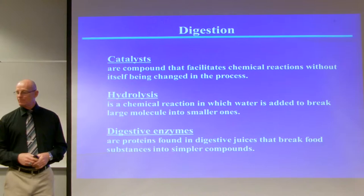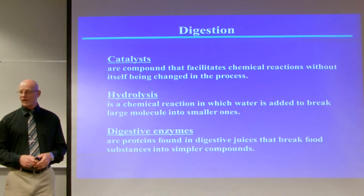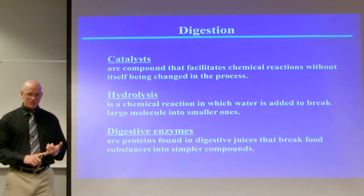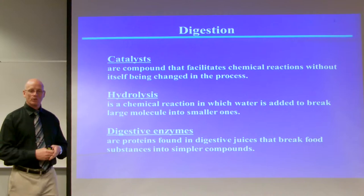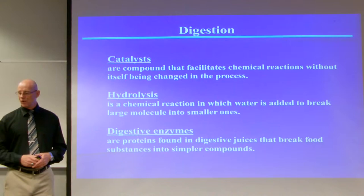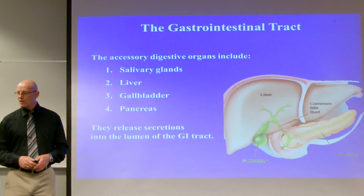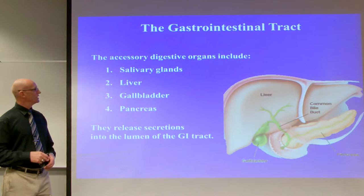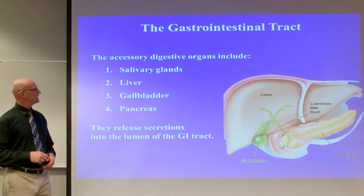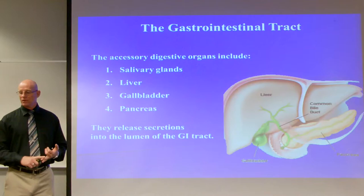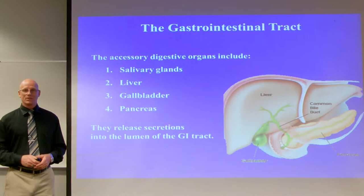There are several ways of breaking substances down during digestion. Catalysts are compounds that facilitate chemical reactions without themselves being changed in the process; minerals are catalysts involved in glycolysis, the citric acid cycle, and the electron transport system. Hydrolysis is a chemical reaction in which water is added to a large molecule and breaks it into smaller molecules — water is a universal solvent. Digestive enzymes are proteins found in digestive juices that break food into smaller compounds. The accessory digestive organs include the salivary glands, liver, gallbladder, and pancreas, which release secretions into the lumen of the GI tract.